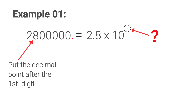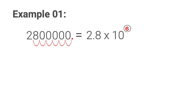How to decide the power of ten? See how many places we moved the decimal point, or simply how many digits did the decimal point pass while coming forward. Here it has passed one, two, three, four, five, and six digits, so the power of ten we put as six. Then our answer becomes two point eight into ten to the power six.